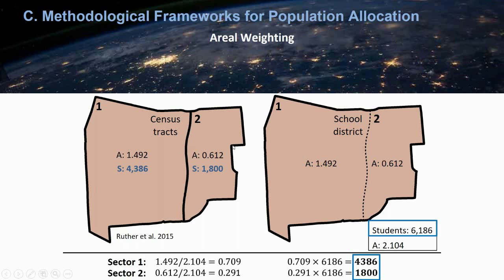This method is volume preserving — as you can see, the target population estimates add up to the initial count of students. This is called the pycnophilactic property, meaning volume preserving.